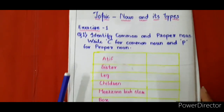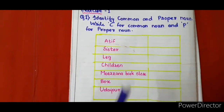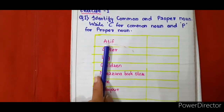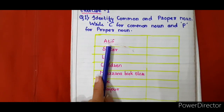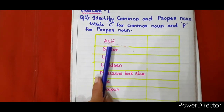Now, the first example is Atif. First of all, let us discuss again what is a proper and common noun. Proper nouns are the particular names given to a person, and common nouns are the common names used for the same kind of person.